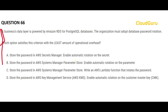Let's jump to the questions. Please pause the video here if you want to read this carefully. It's simple: you have a database which is RDS for Postgres. Usually, when people try to log in they put in a username and password. What the organization now wants is a password rotation policy, and they want to do it with the least amount of operational overhead. We have these four options.